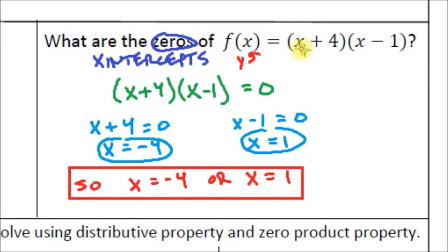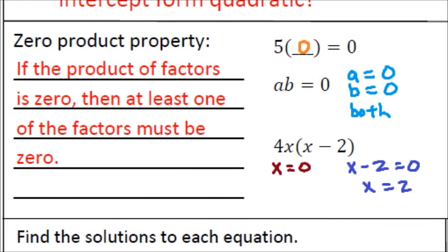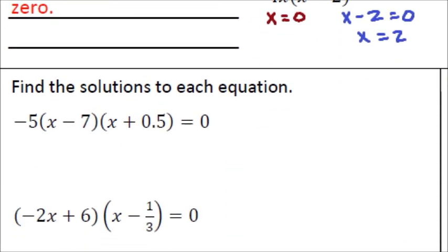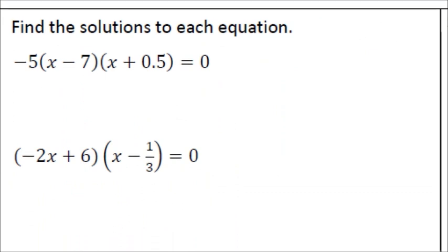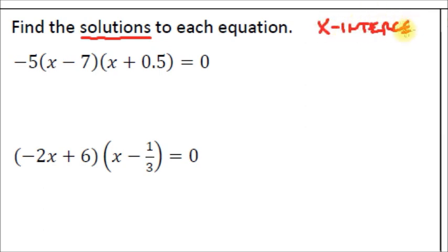You can see how easy it is to find x-intercepts when the equation is in intercept form. Let's go to the next set of examples: find the solutions to each equation. Remember, solutions, zeros, and x-intercepts all mean the same thing. We've got an equation equal to zero, and we need to find the two x-values that change the whole equation to be true.